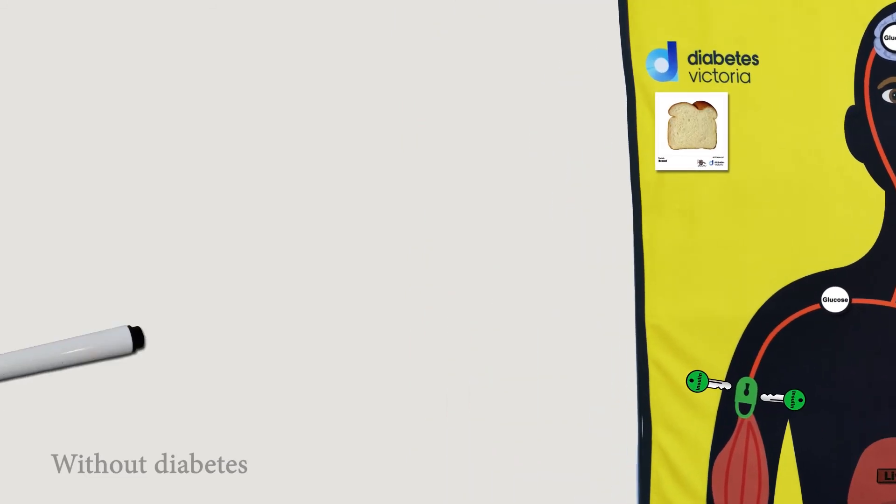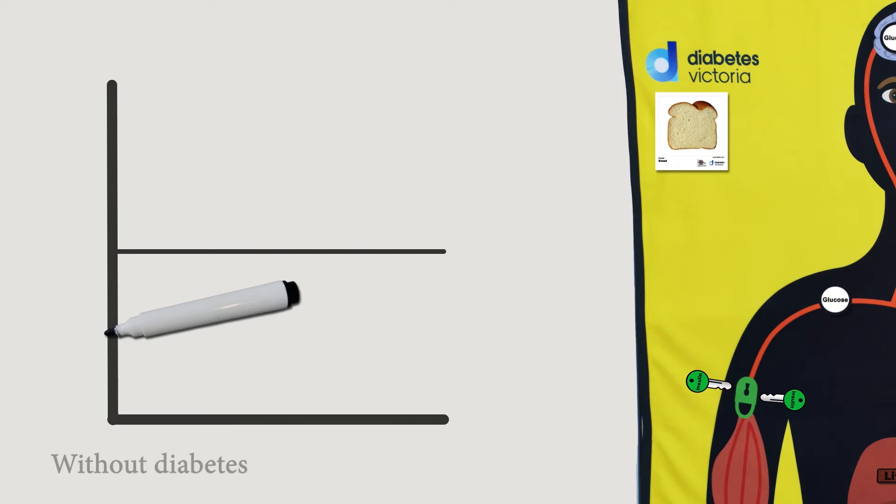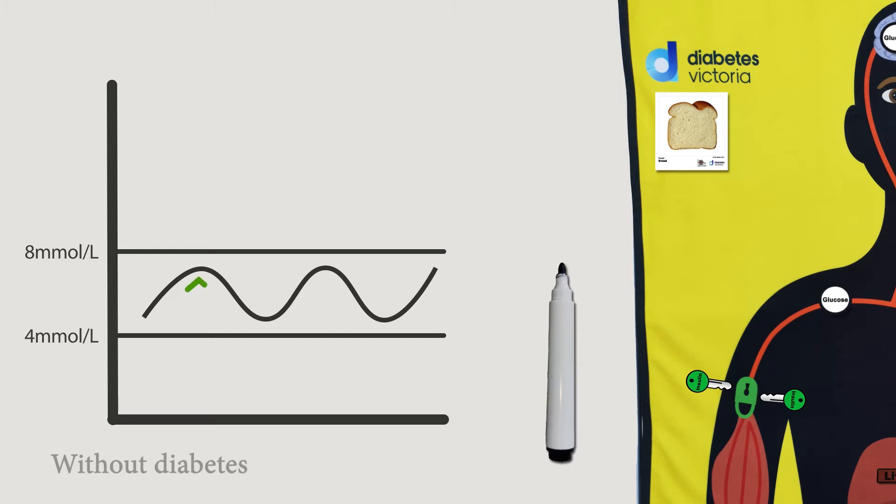In a person without diabetes the blood glucose level goes up and down but always stays within the normal range between four and eight millimoles per litre. After a meal containing carbohydrate the blood glucose level is closer to the top of the normal range. A few hours after a meal when the insulin has helped to move the glucose into the muscles, the blood glucose level will be closer to the lower end of the range.